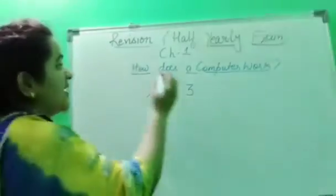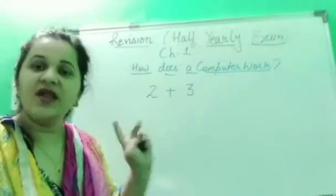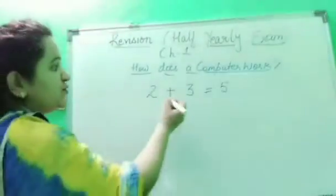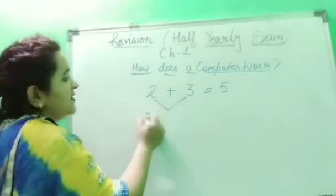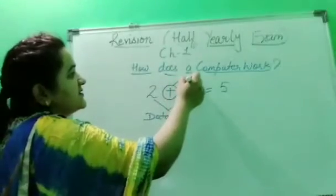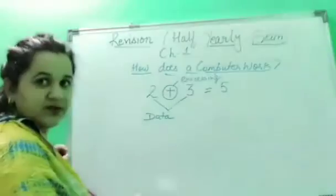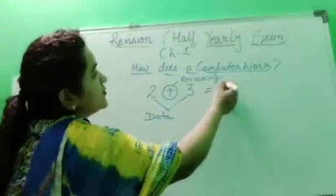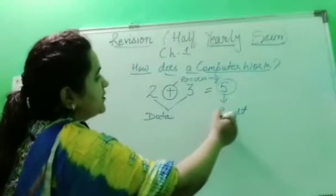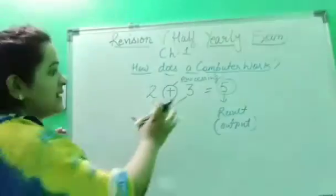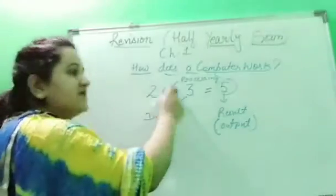Now I will give you the instructions — I ask you to add them. Now an instruction is given to you, you will process it in your brain, and you will produce the result. Two plus three equals five. So 'two' and 'three' are the data, the addition is the processing, and after processing is done we get the result — that is the output.